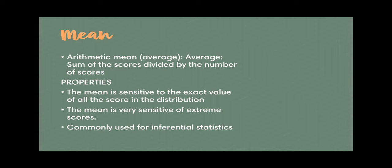The most common form of central tendency measure is the mean, or basically your average. Your average is the sum of scores divided by the number of scores. I know you already know how to compute a mean — you've known this since elementary. So very important: what are the different properties of a mean?